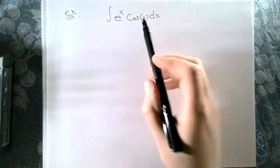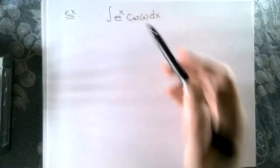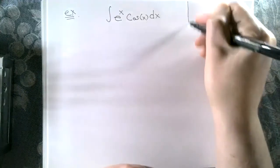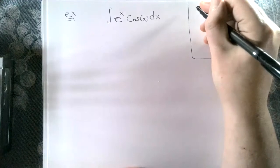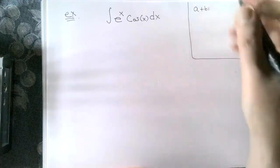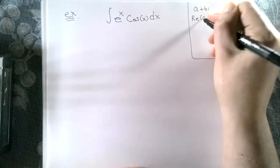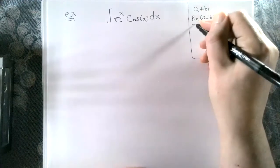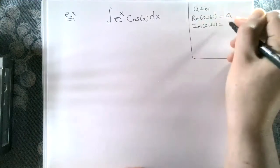Typically you run across a problem like this in Calculus 2 when talking about integration by parts, and very often use a technique called solving algebraically for the integral. But we're going to try this with Euler's formula. Remember: if I have a complex number in A plus Bi form, the real part is A and the imaginary part is B.